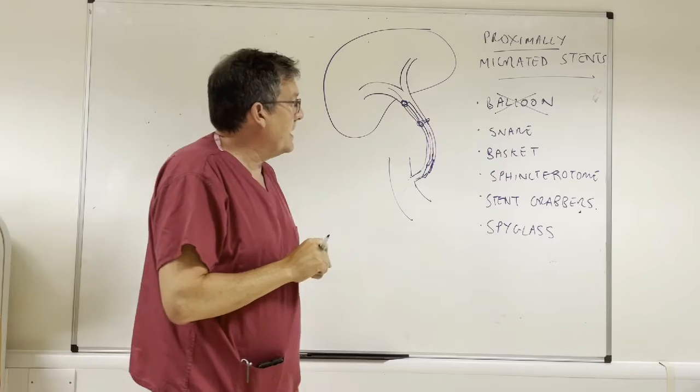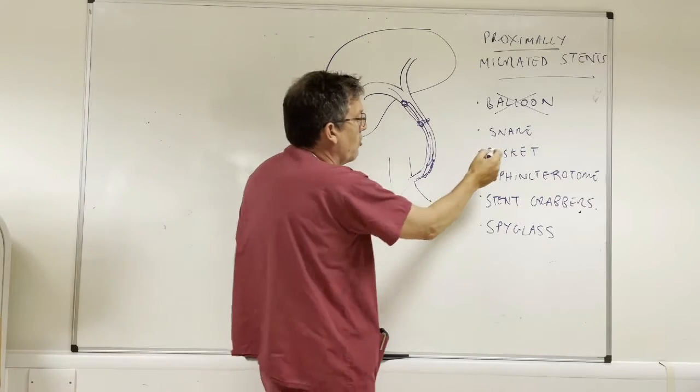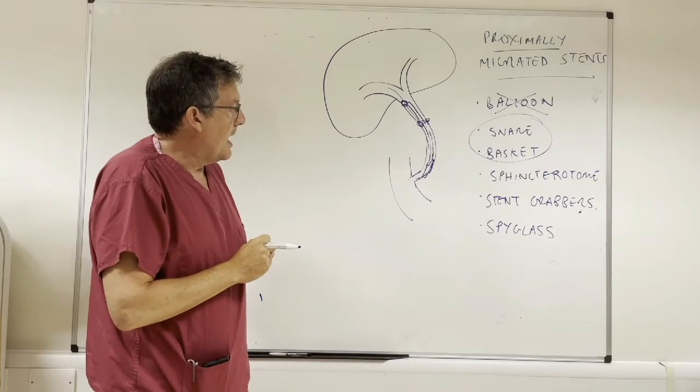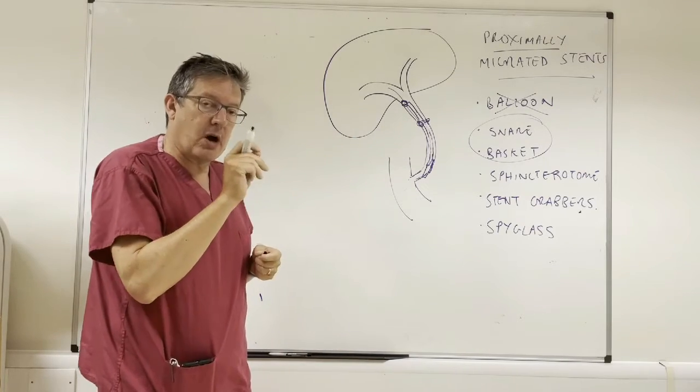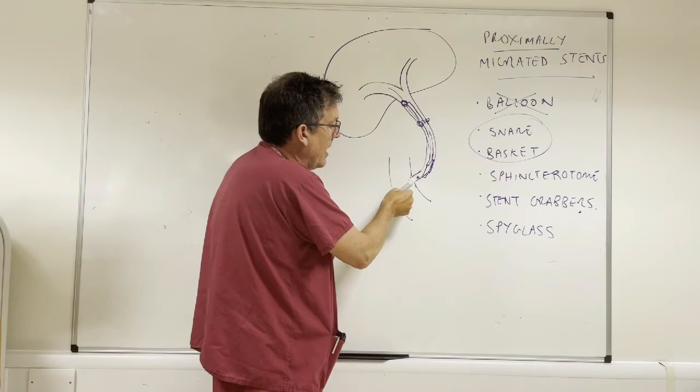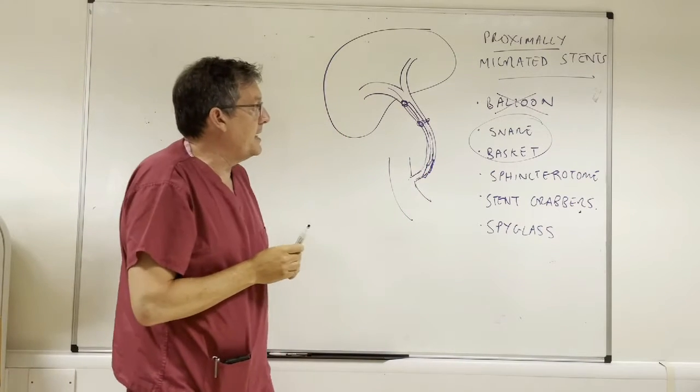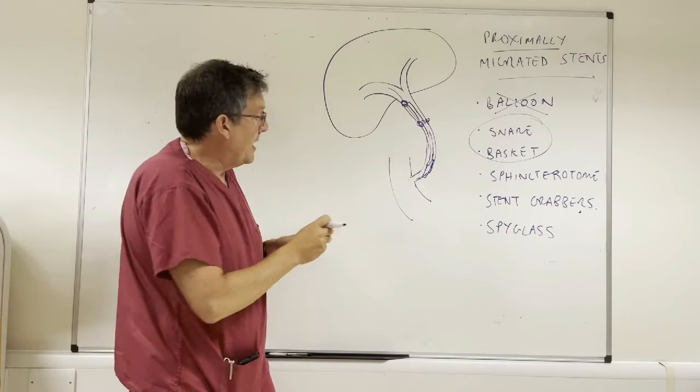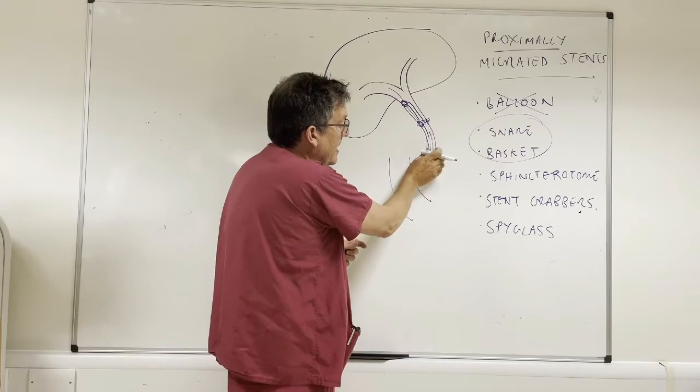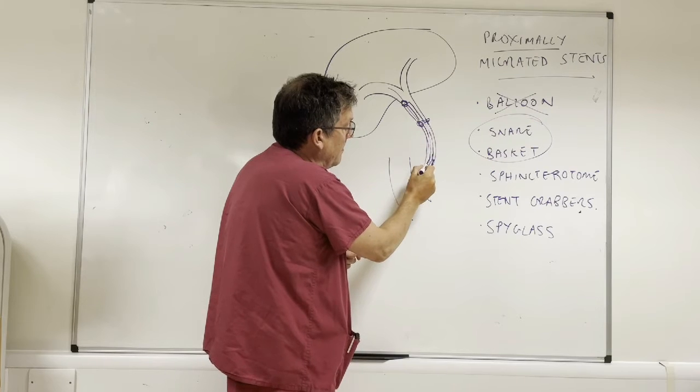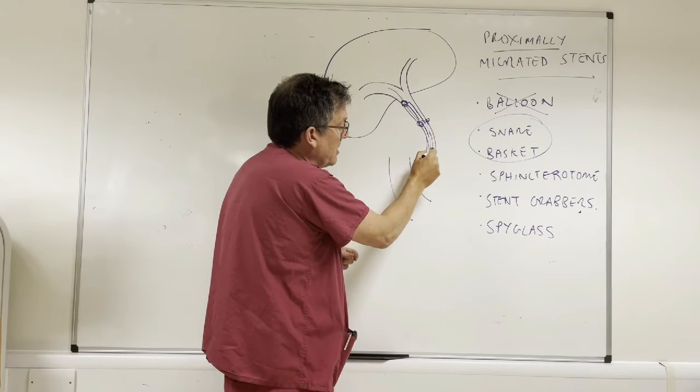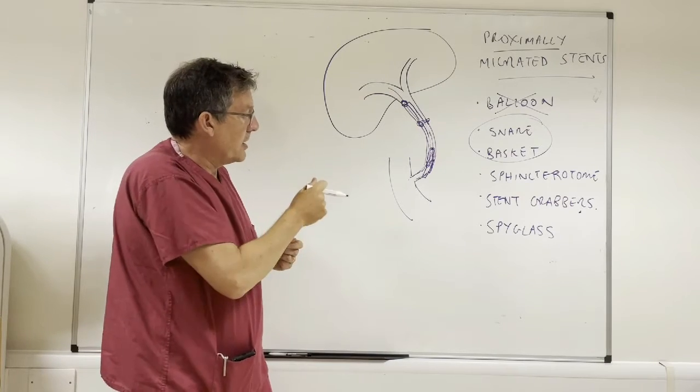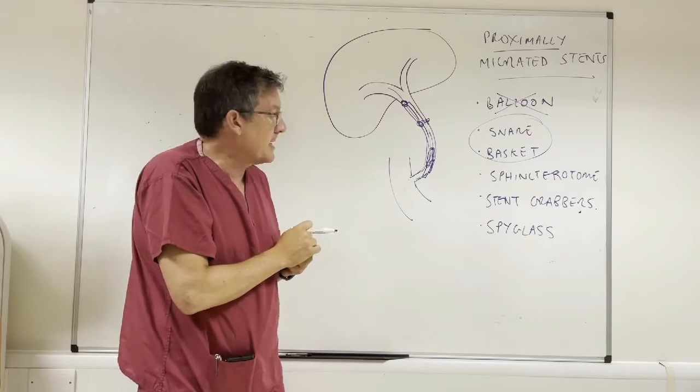The second option is a snare or a basket. I'm going to put those two together. One can try freehand insertion of the snare or basket and then hoping to open the basket with the snare or the wires of the basket around the lower end of that stent and closing on that and pull that out. That does occasionally work.